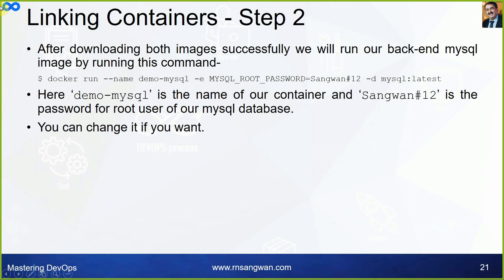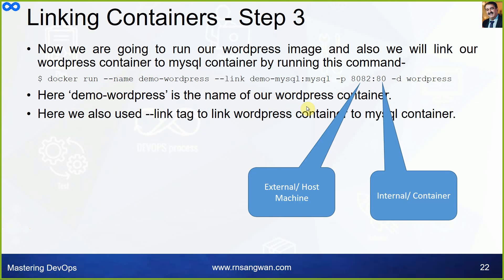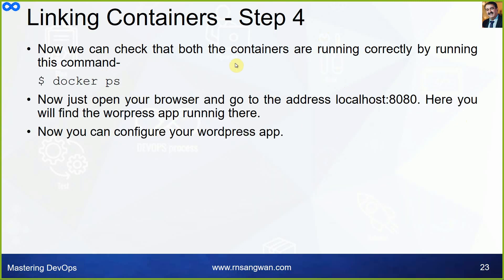This is a perfect example of linking containers. We created a link to the database container and are running WordPress inside one container while the MySQL database runs in another, accessed via the link. To summarize: docker run --name demo_mysql with environment variable and -d flag runs the backend. Then docker run --name demo_wordpress --link demo_mysql:mysql -p 8082:80 -d wordpress links the frontend to backend. The --link tag connects the WordPress container to the MySQL container.